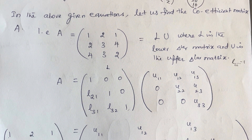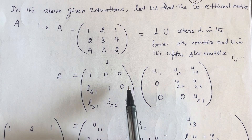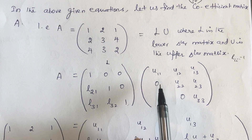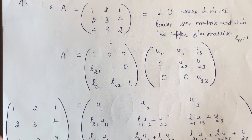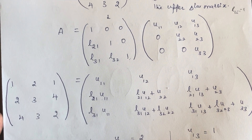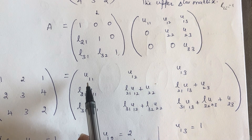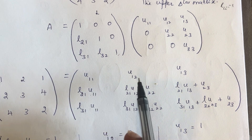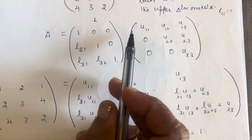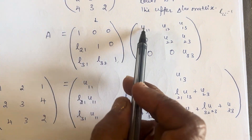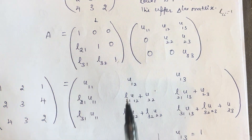Since A is equal to LU, let me multiply these two matrices L and U by ordinary matrix multiplication. Multiplying both L and U, I arrive at a single matrix with first row: U11, U12, U13 — that is 1 into U11, first row with first column, first row with second, and first row with third, and similarly the rest.